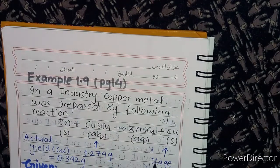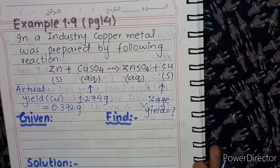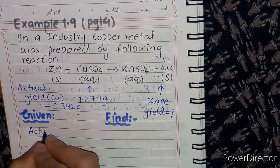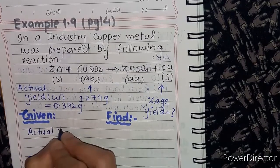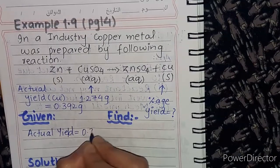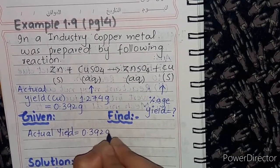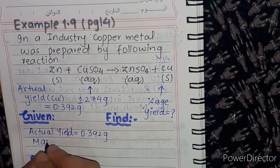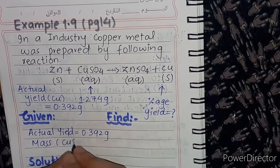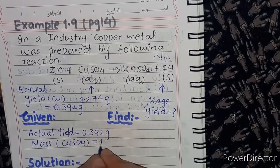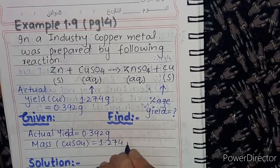We will write the data here. Actual yield is given as 0.392 grams, and the mass of CuSO₄ given is 1.274 grams.